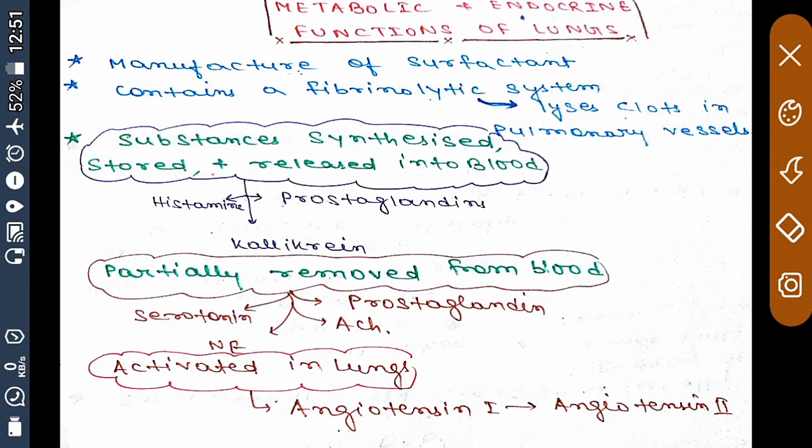Hello friends, now we are going to discuss the metabolic and endocrine functions of the lungs. The first function of the lung, beside respiration, is the manufacture of surfactant, which reduces surface tension and prevents the lungs — basically the alveoli — from collapsing.